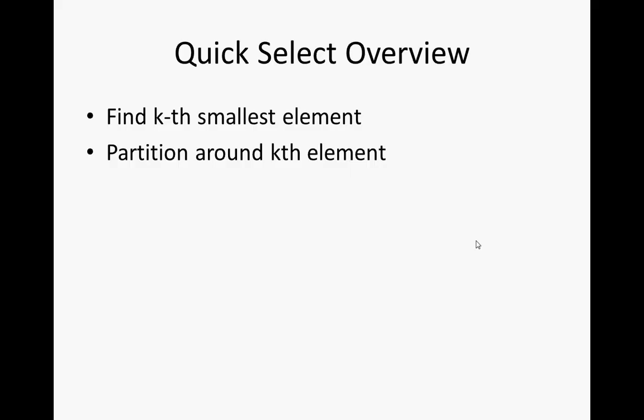A quick overview of what Quick Select does. It finds the kth smallest element, and then partitions the array around that element. That means put everything that's smaller than that kth element on one side, and everything bigger on the other side.